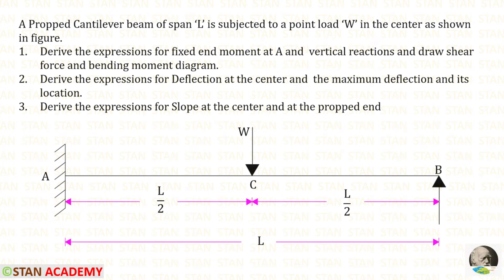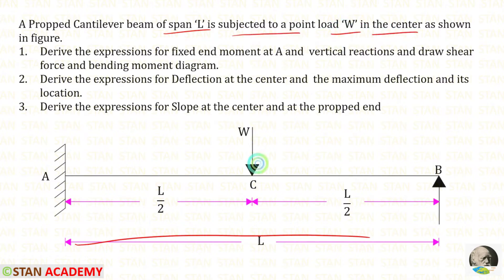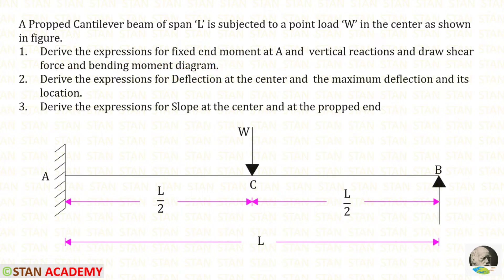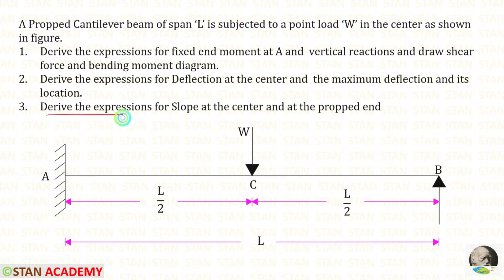Hello everyone. Today we are going to analyze a propped cantilever beam. This beam has a span of L and is subjected to a point load W at the center. First, we are going to find the expressions for the fixed end moment at A and the vertical reactions. Then we will draw the shear force and bending moment diagrams, derive expressions for deflection at the center and maximum deflection, and derive expressions for the slope at the center and at the propped end.